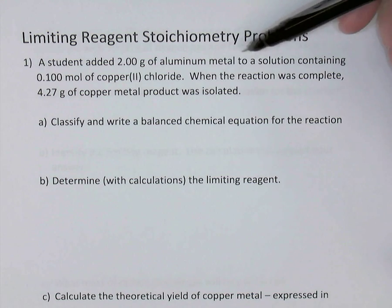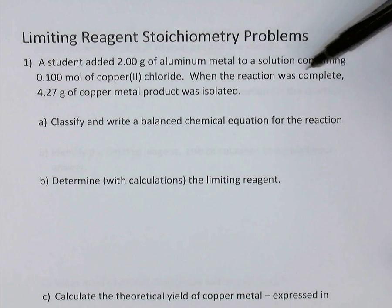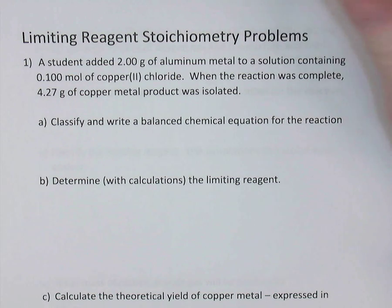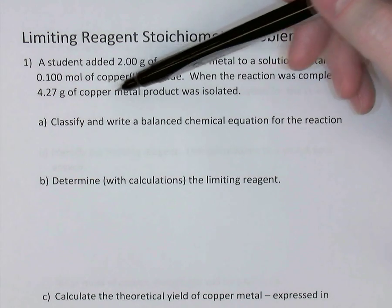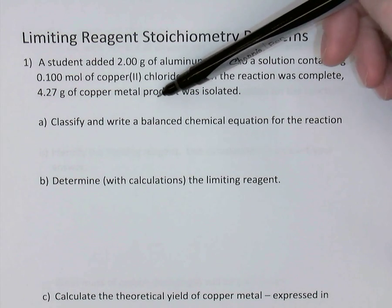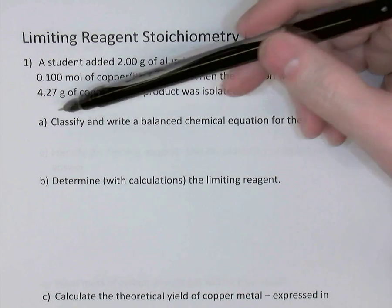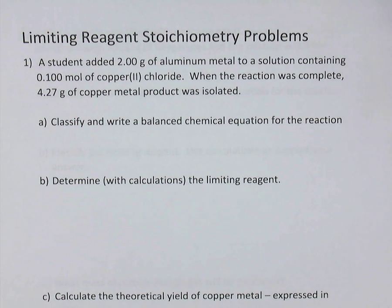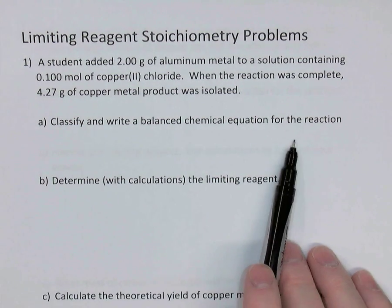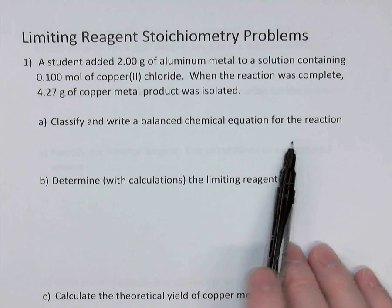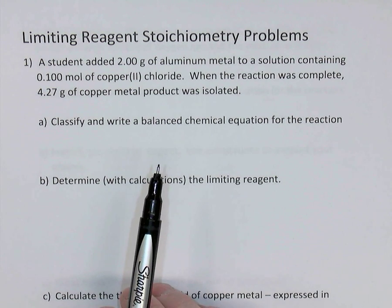We're told that when the reaction is completed, 4.27 grams of copper metal was isolated — that is, produced. The copper is a product being isolated, so it's not one of the reactants and would not be considered a limiting reagent, because reagents have to be reactants. To start, let's write a balanced chemical equation — pause the video and see if you can do that.